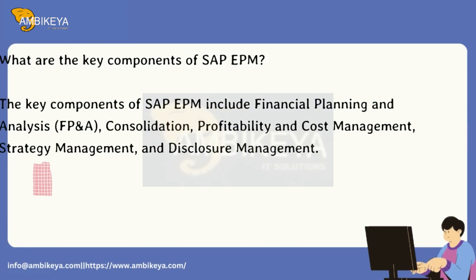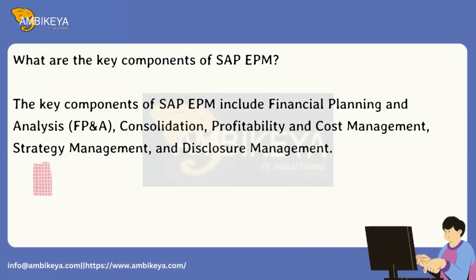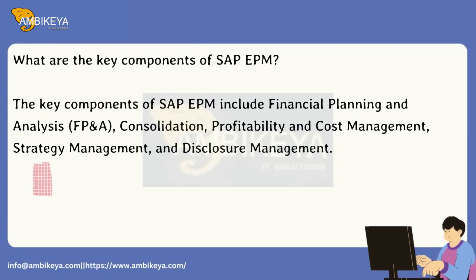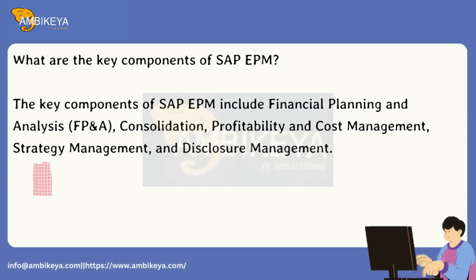What are the key components of SAP EPM? The key components of SAP EPM include Financial Planning and Analysis (FP&A), Consolidation, Profitability and Cost Management, Strategy Management, and Disclosure Management.